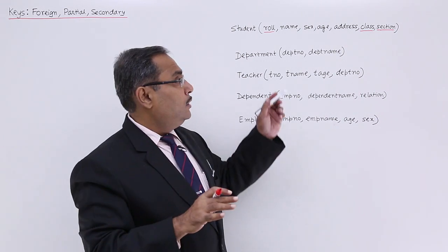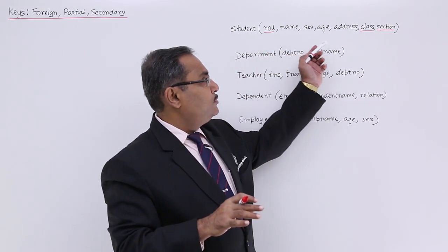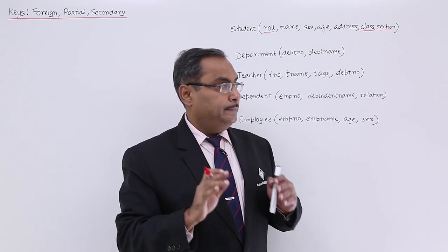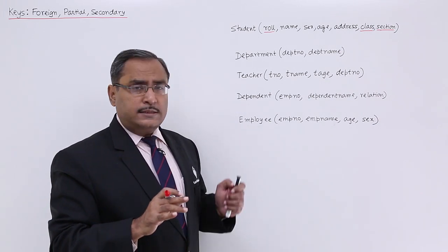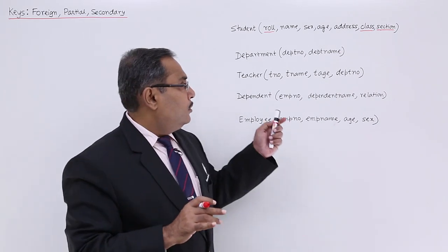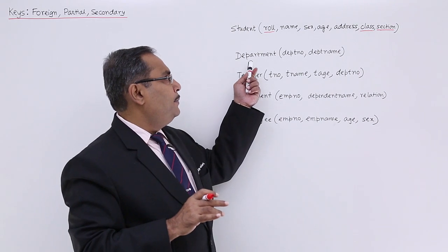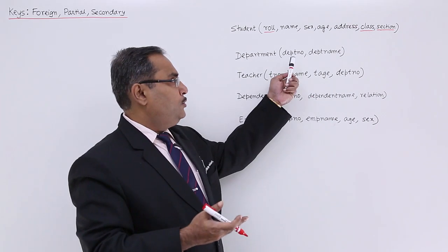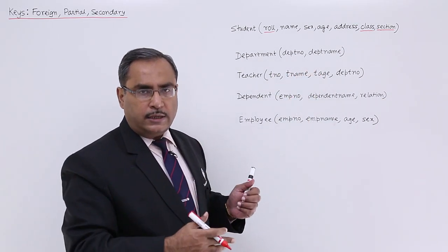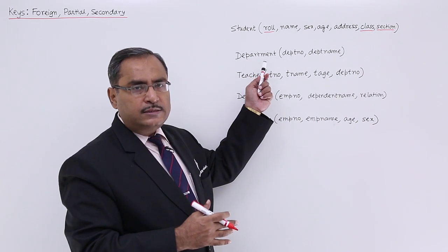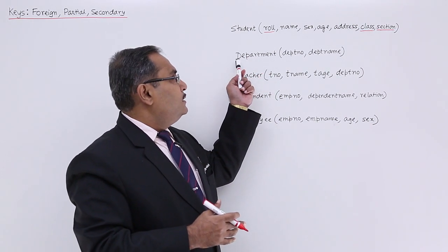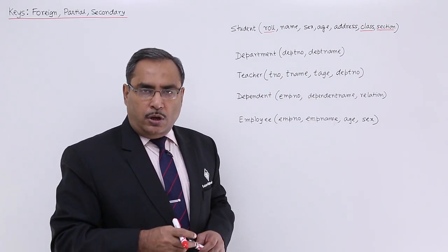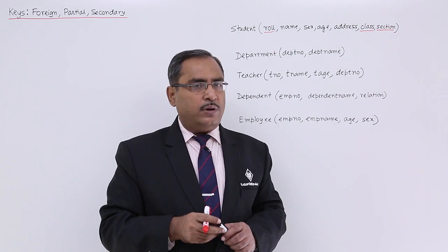The remaining attributes are known as non-prime attributes. Now let us come to the foreign key first. Consider this particular table — the department schema — which has department number and department name. The logical description of a database is known as a schema, which we discussed earlier.